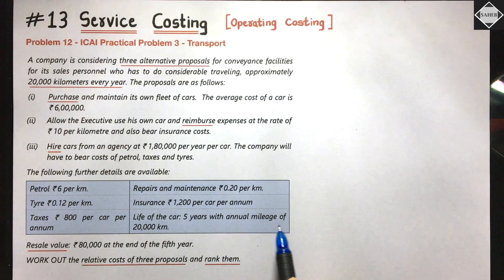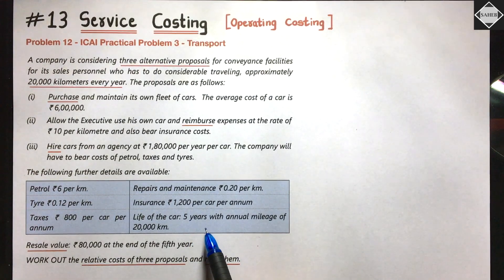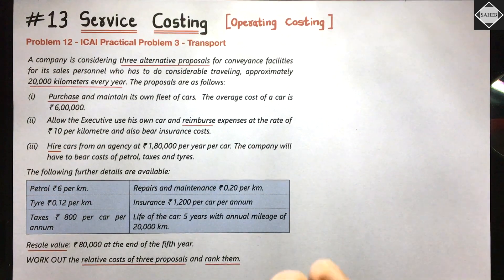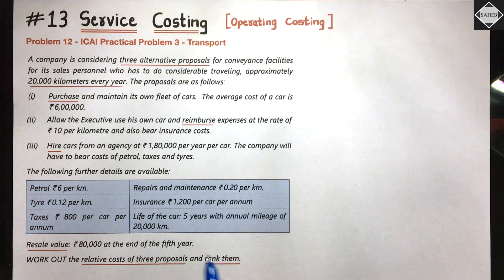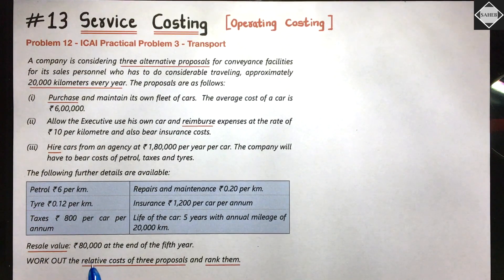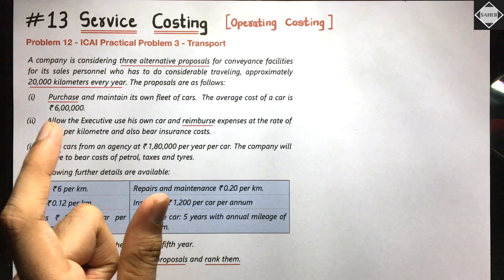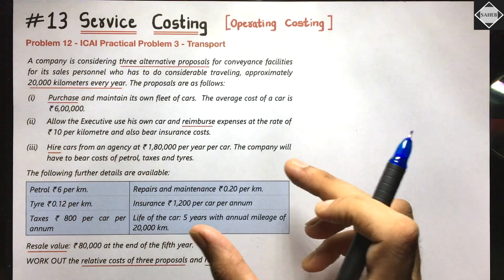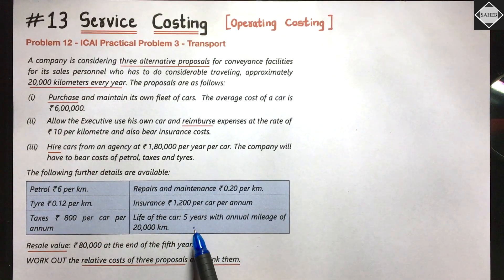Insurance is 1,200 rupees per car per annum. The life of the car is five years with an annual mileage of 20,000 kilometers. The life is given to calculate depreciation — we cannot take the entire cost in the first year, only the depreciation for that year. The resale value is 80,000 at the end of the fifth year, which is the scrap value. Depreciation formula (straight-line method): cost minus scrap value divided by useful life = (6,00,000 − 80,000) ÷ 5 = 1,04,000 per annum.